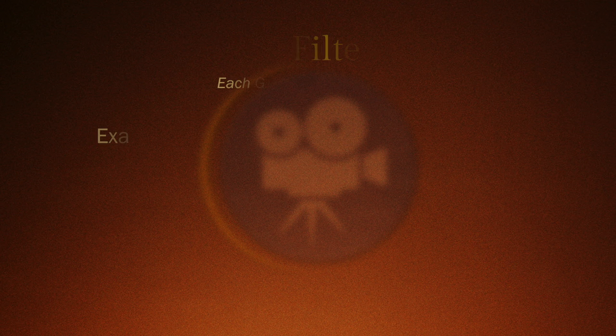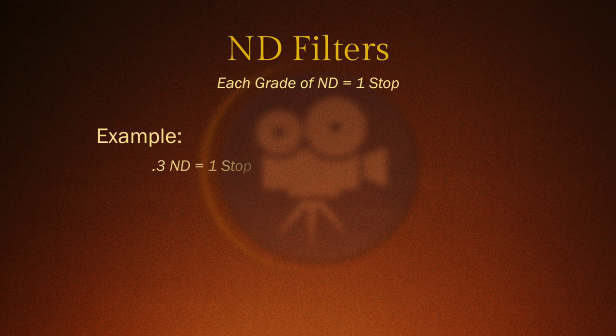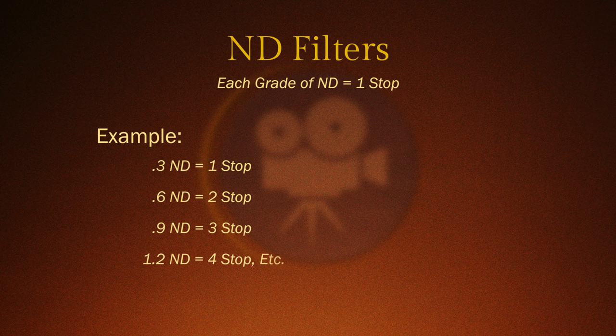NDs are traditionally marked in full stop increments, so every increase of 0.3 equals one stop of light — starting at 0.3, then 0.6, 0.9, and so on. When we talk about ND filters on set, we drop the zero and just refer to it in whole numbers. So I'd say something like, get me the N9 or the N12.